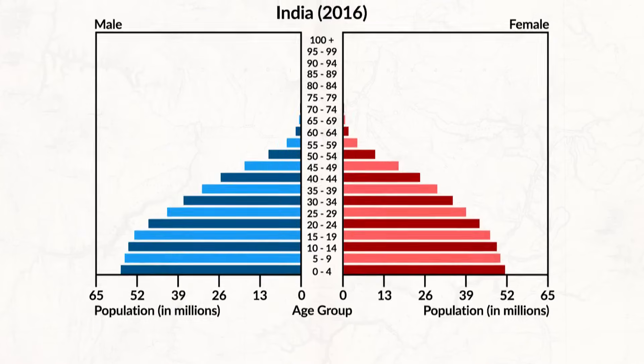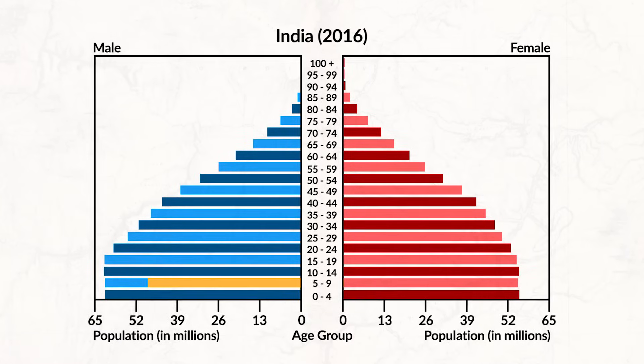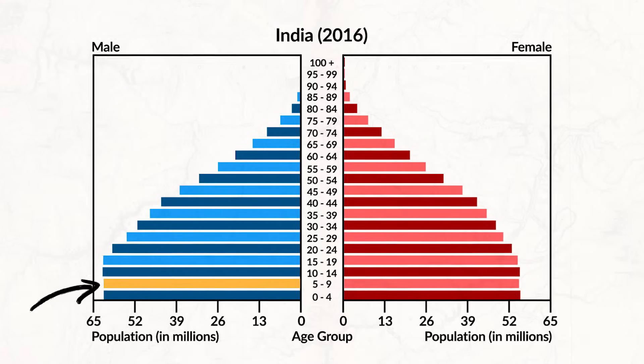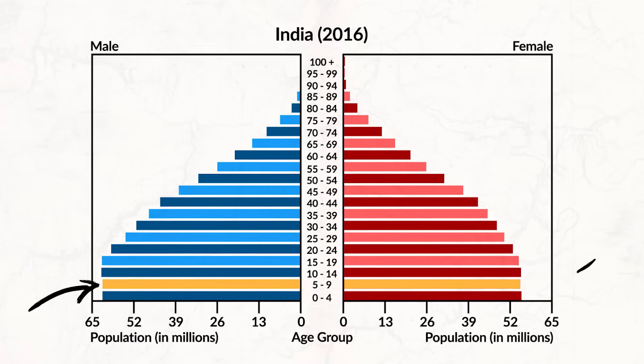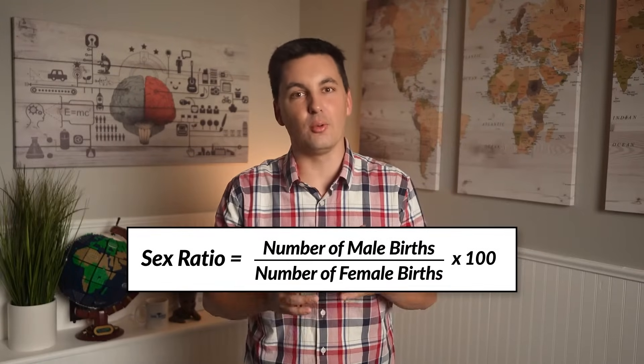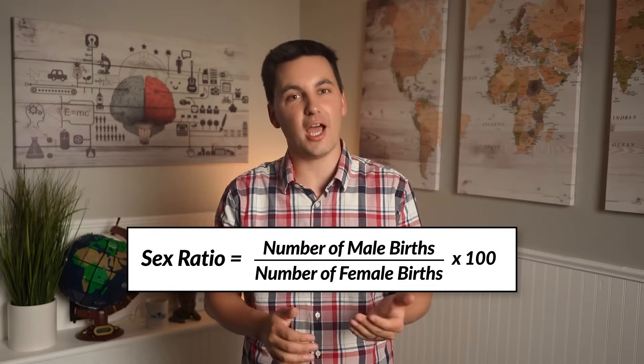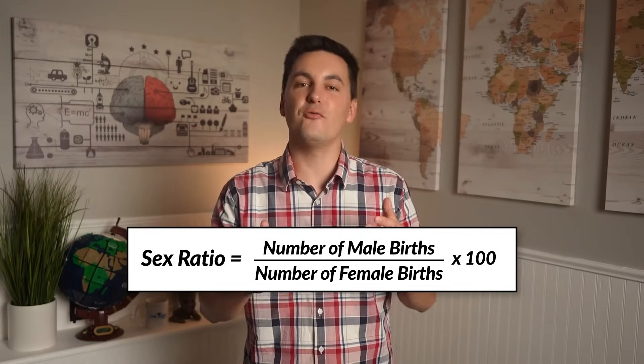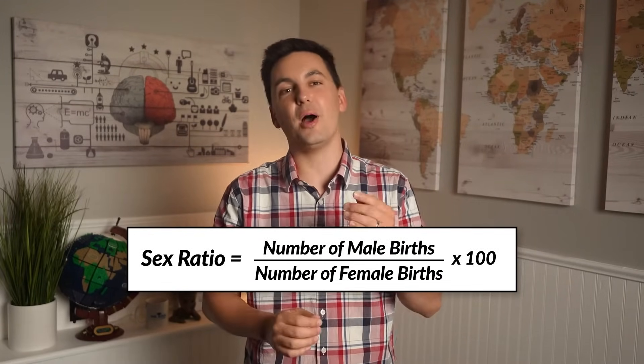For example, here we can see that India has just under 65 million boys at ages 5 to 9, and at the same time has just over 52 million girls at ages 5 to 9. When looking at population pyramids and focusing on the two sexes, we're able to gain insight into a society's sex ratio, which is the ratio of males to females in a population. To find this ratio, you take the number of male births and divide it by the number of female births, then multiply by 100.